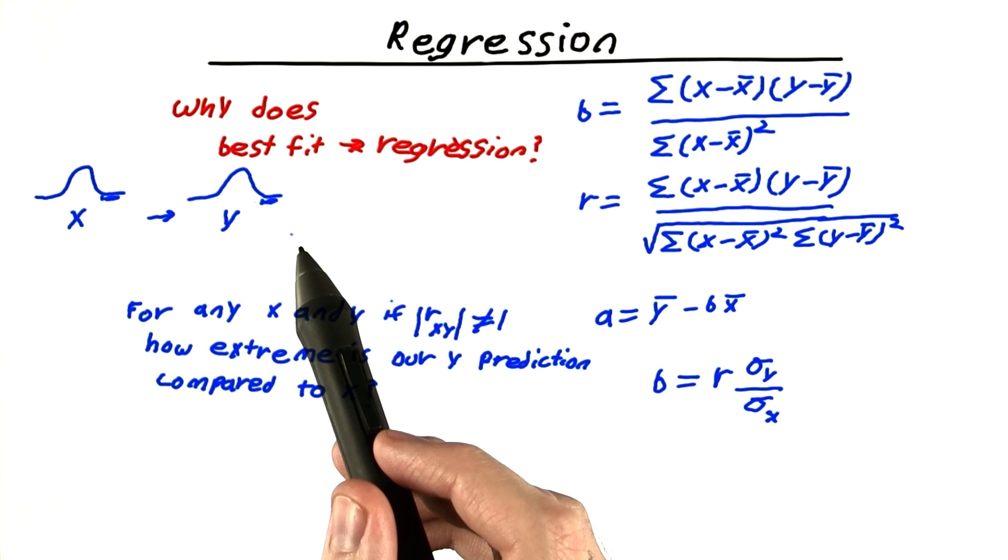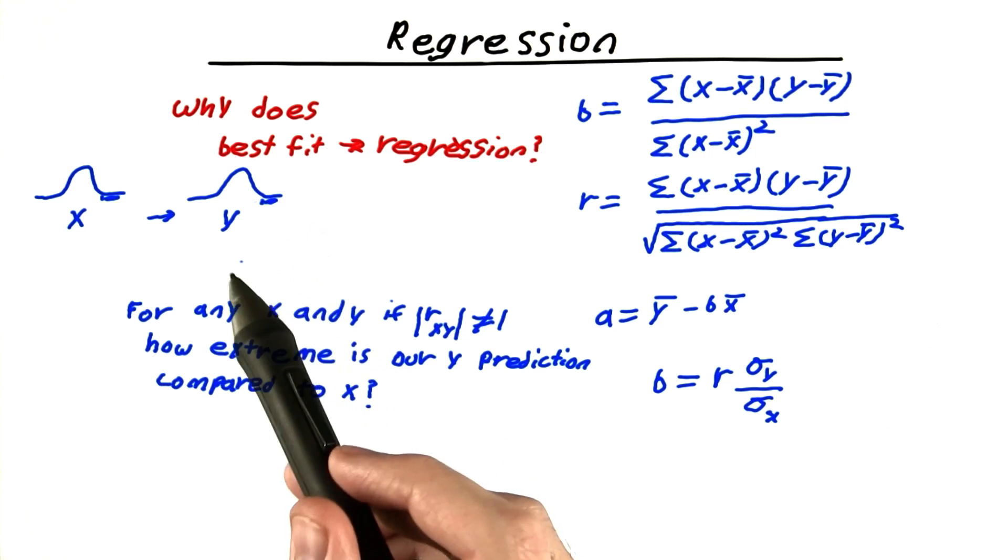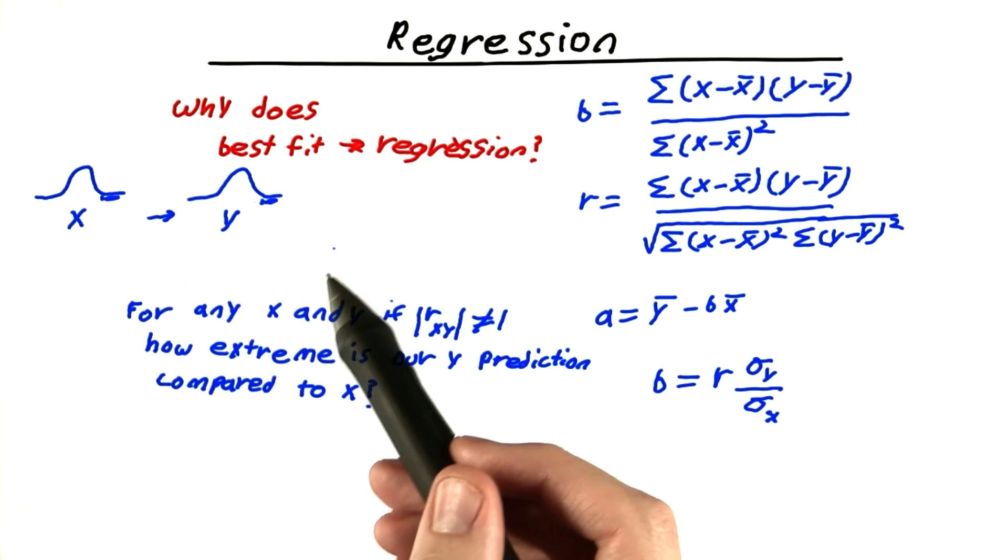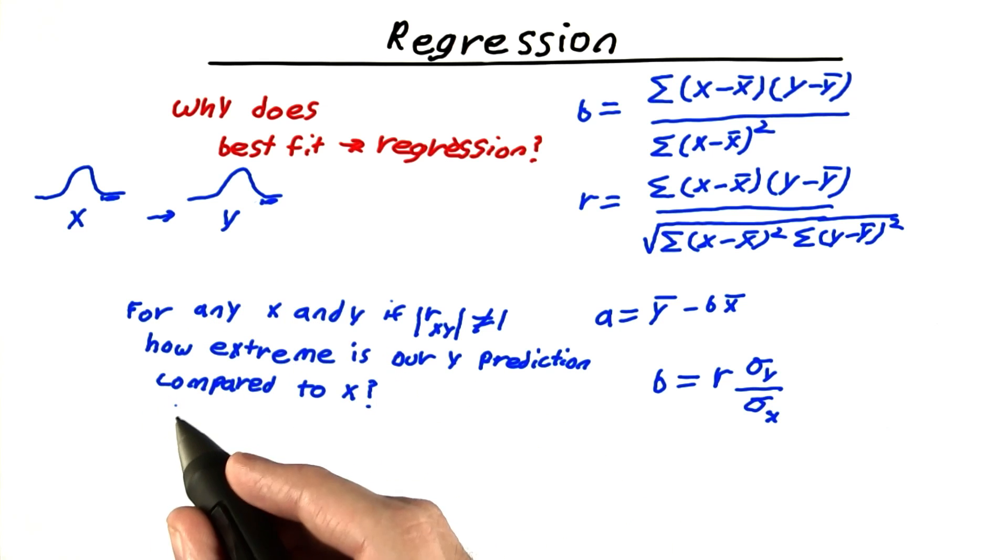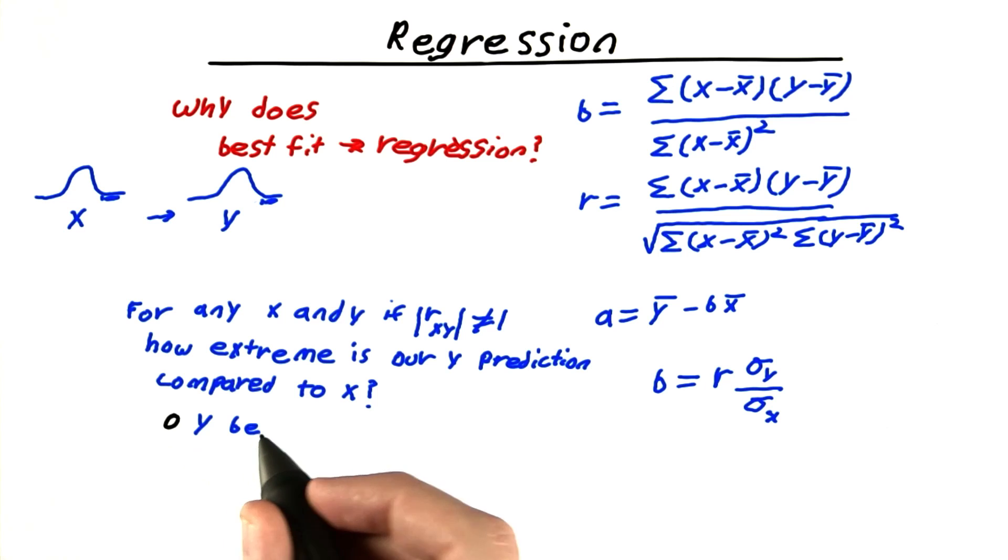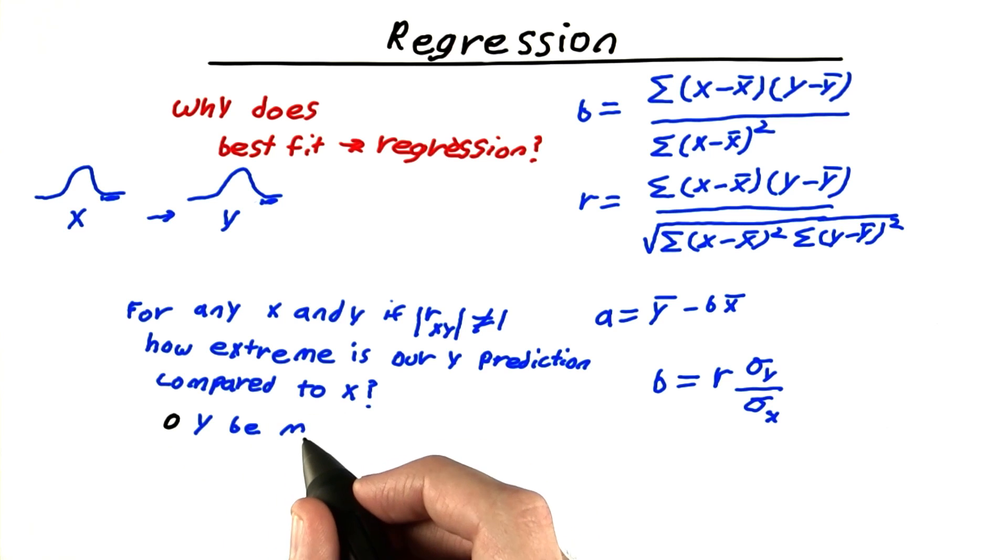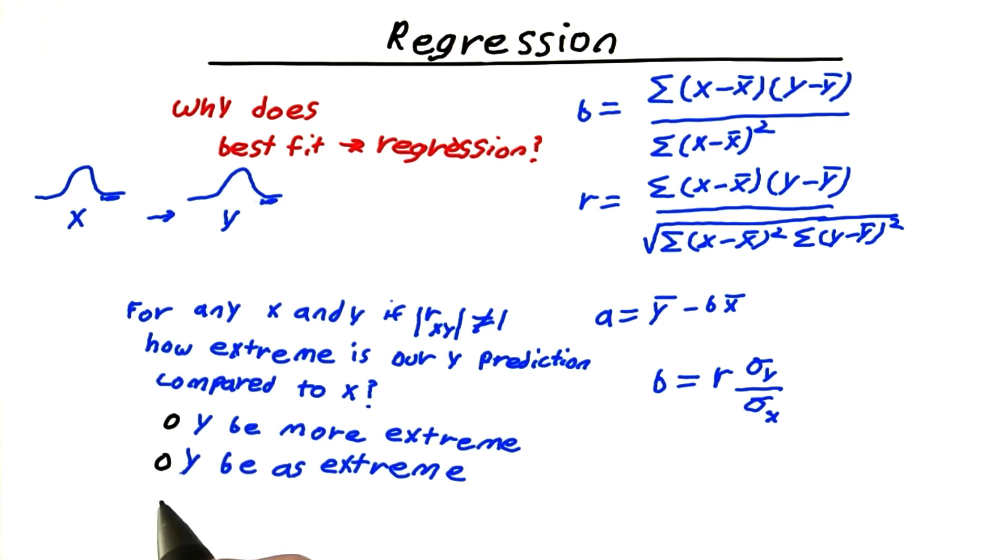So, 1% chance is more extreme than a 40% chance. One in a million is more extreme than one in a thousand. So what I'd like you to tell me is will y be more extreme? Will y be as extreme? Will y be less extreme? Or it depends on the data. Please check the right answer.